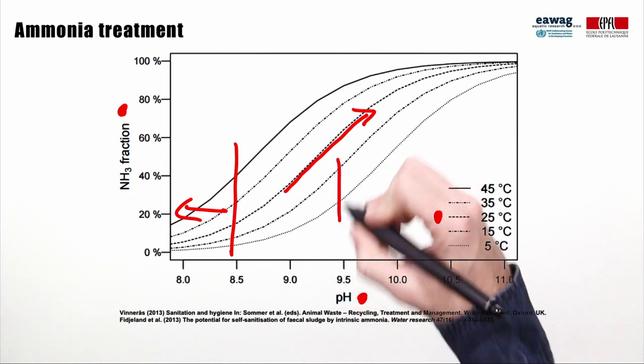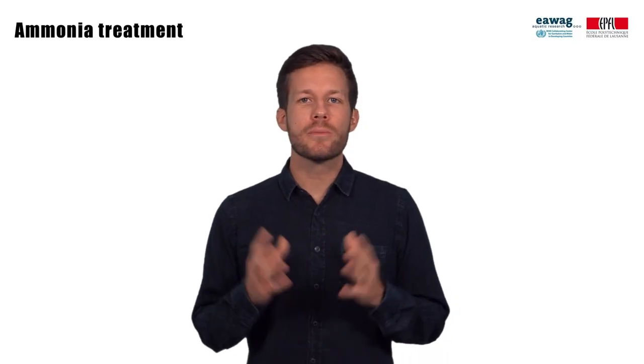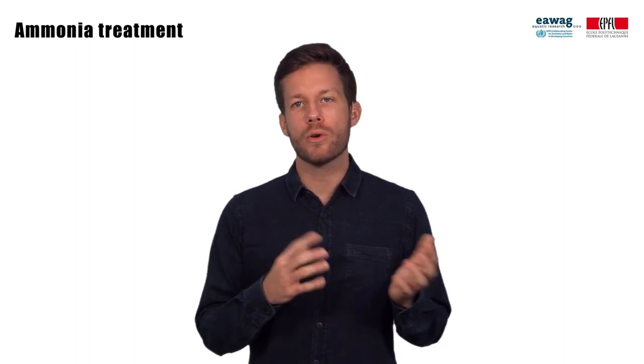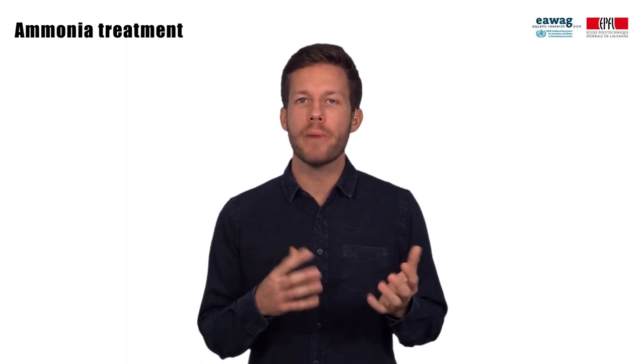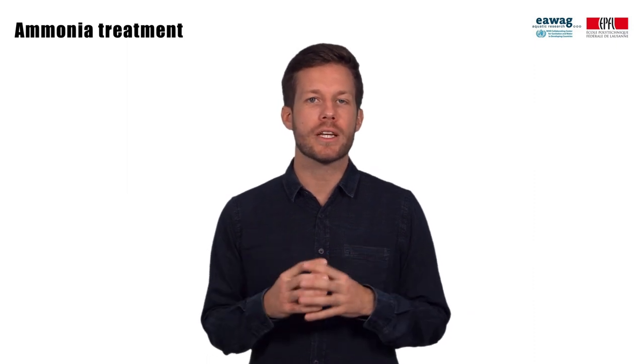An increase in temperature also increases ammonia concentrations. Next to the toxicity of ammonia, the high pH is also an additional mechanism for pathogen inactivation in ammonia treatment. Fecal sludge collected from septic tanks and pit latrines is mostly water, which dilutes the ammonia and results in low concentrations available for pathogen inactivation, even at an elevated pH. Loss of ammonia and ammonium, which are volatile, through open manholes in septic tanks or drop holes in pit latrines also reduces the concentration of ammonia available.